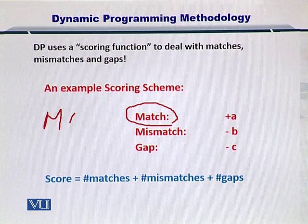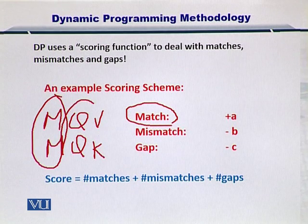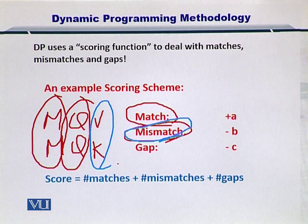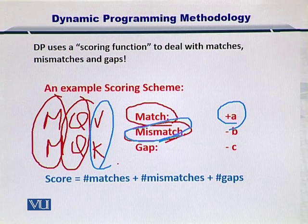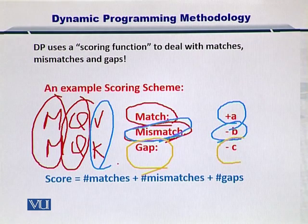The first is a match, where two nucleotides or two amino acids match with each other. For instance, if you have one sequence and compare it with another, you can have matches at some positions but a mismatch at others. The scoring scheme considers the number of matches and multiplies by a positive score, given by plus A. You can assign any score to a match, but it should be positive. In the case of a mismatch, the score is a negative number, and for a gap, there is a different negative score.